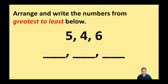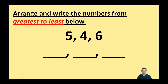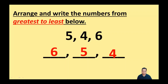For these directions we're going to arrange and write the numbers from greatest to least below. I've got these three numbers here: five, four, and six. Which one would we put first? What's the greatest number or the biggest? That's right, it's six. Then what would follow that next? Yes, five, and then what follows that? That's right, it's four.